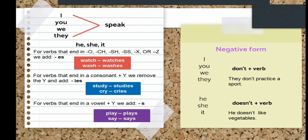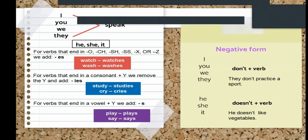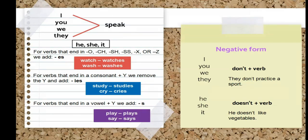The same with wash — since it ends in SH, you add E-S. And according to the spelling of the letters, there are rules you have to follow to add the letter S to the verb. If the verb ends in O, for example go, you don't only add the letter S — you add the letter E too, so it becomes goes.